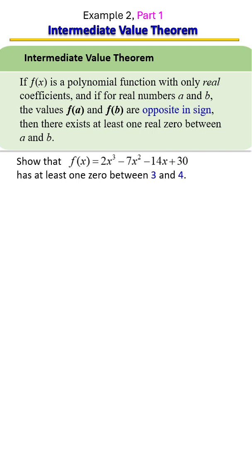then there exists at least one zero between a and b. In this example, we're asked to determine whether or not this polynomial has one zero between three and four.